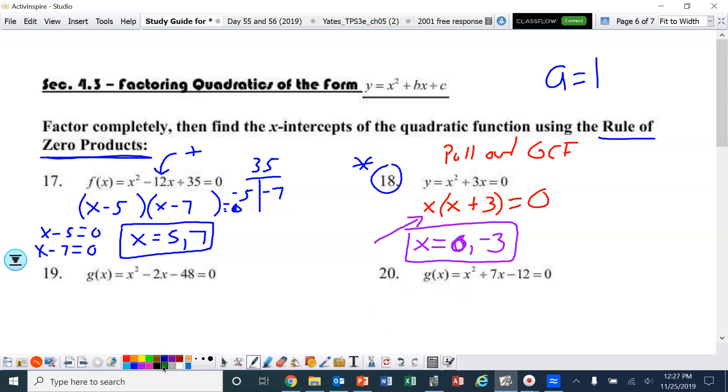Number 19. Factors of negative 48 that add up to negative 2. Well, 6 and 8 make 48. And since that's a negative 2, we'd have to have negative 8 and positive 6. They add up to negative 2, and they multiply and give us negative 48. So we have x minus 8 and x plus 6. That equals 0. So the x-intercepts are x equals positive 8, negative 6.